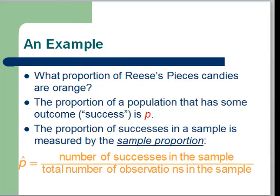So let's see how this is done. Suppose I have the question: what proportion of Reese's Pieces candies are orange? Well, let's talk about proportion here. The proportion of a population that has some outcome or success, in this case being orange is the success.